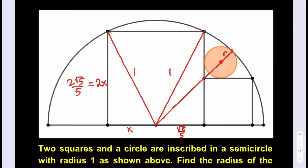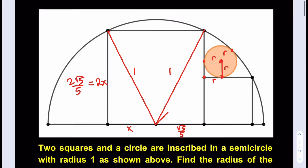To find the radius r, I can make connections along the radii of the circle. These segments are both r, which means the hypotenuse of the resulting right triangle is r√2. So one leg is r, the other is r, and the hypotenuse is r√2.